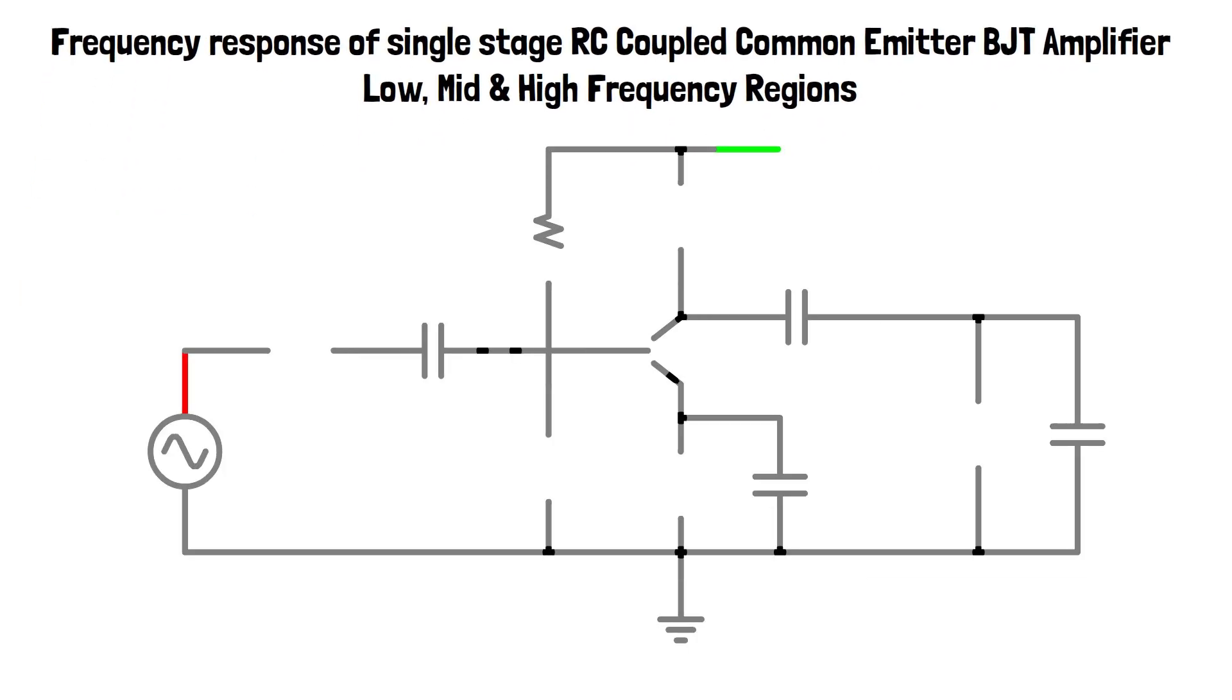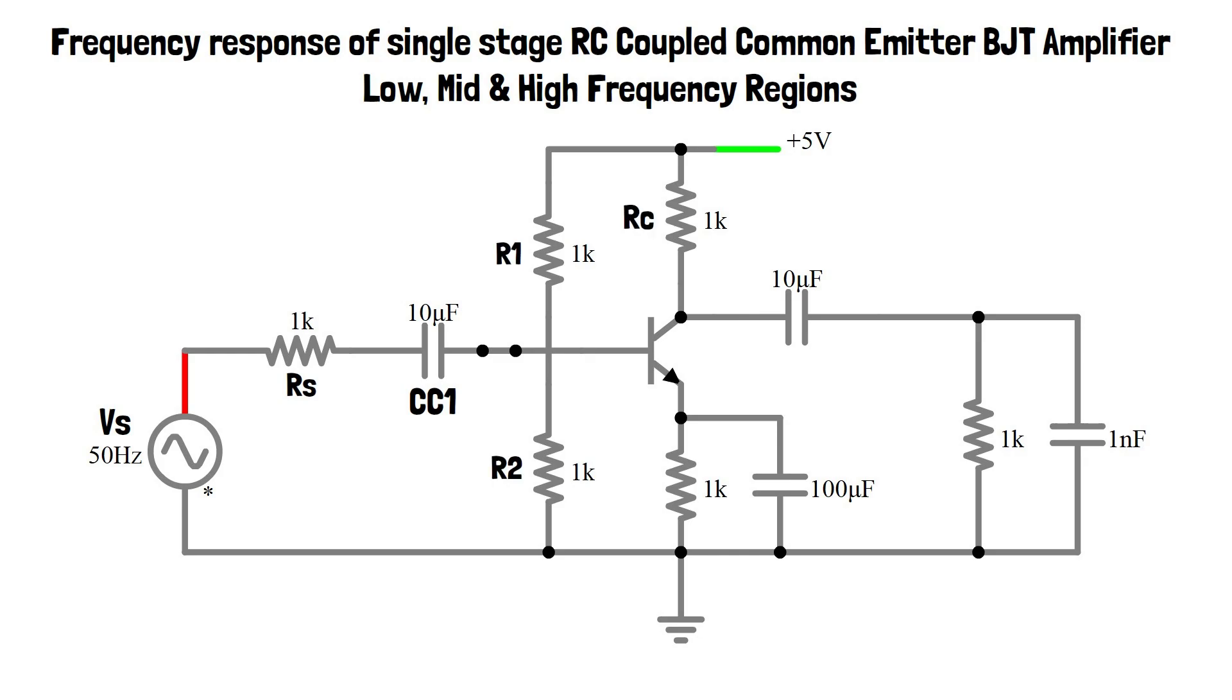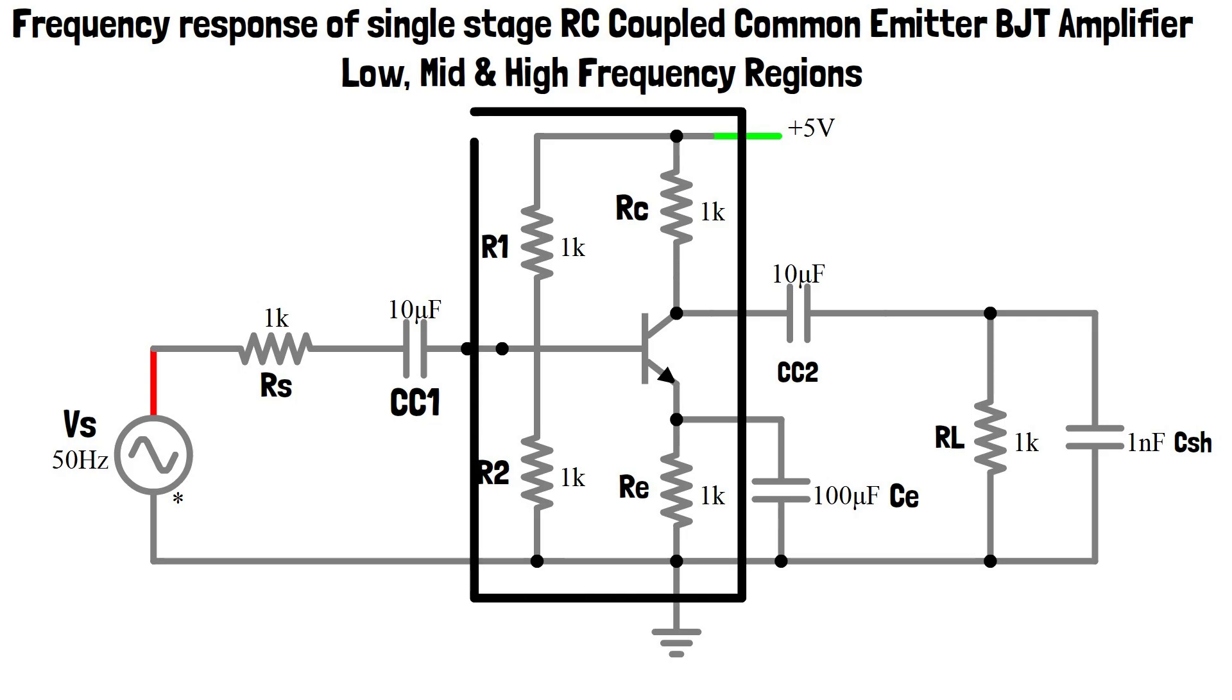First let's draw the circuit diagram of RC coupled BJT amplifier. Now let's analyze function of each element. Bipolar junction transistor is in self bias common emitter configuration.